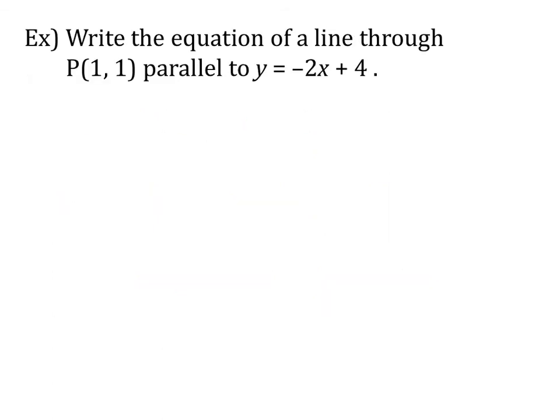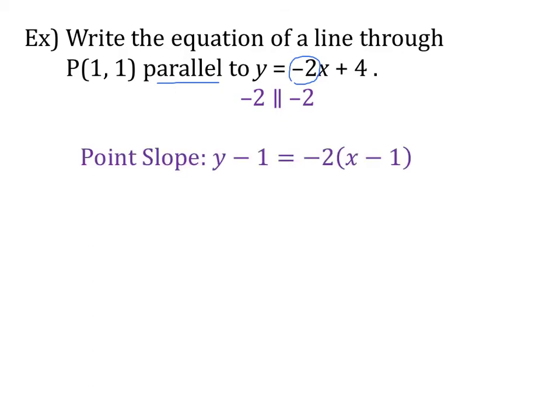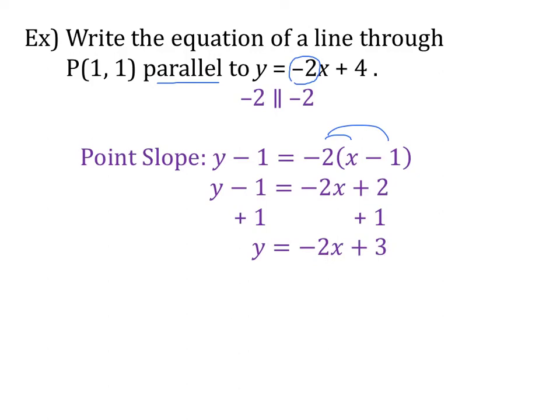Let's try this example. Write the equation of a line through (−1, 1) parallel to y equals negative 2x plus 4. Since we're talking about parallel, our slopes are going to be the same — a slope of negative 2 is parallel to a slope of negative 2. Now we have a slope and a point, so we're going to use point-slope form: y minus y1 equals m times x minus x1. Plugging in, that's y minus 1 equals negative 2 times x plus 1. Distributing the negative 2 gives y minus 1 equals negative 2x plus 2. Adding 1 to both sides, our final answer is y equals negative 2x plus 3.